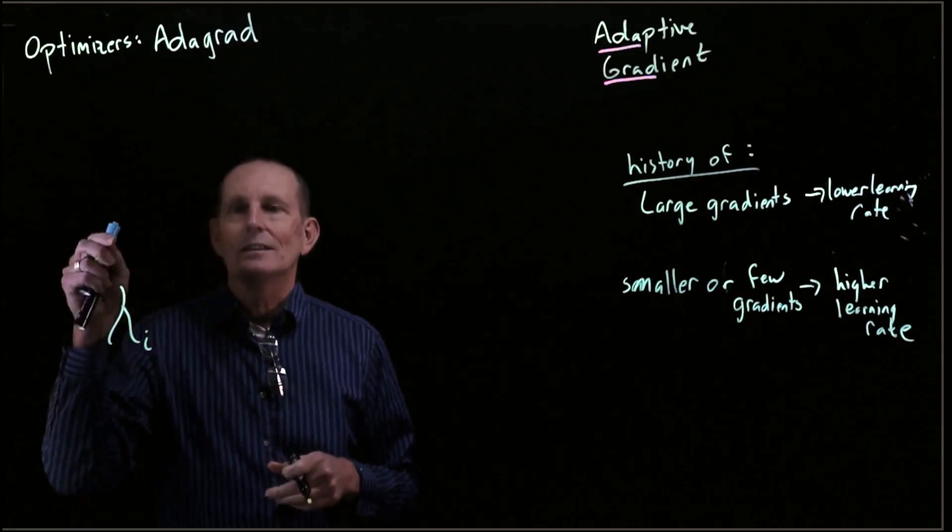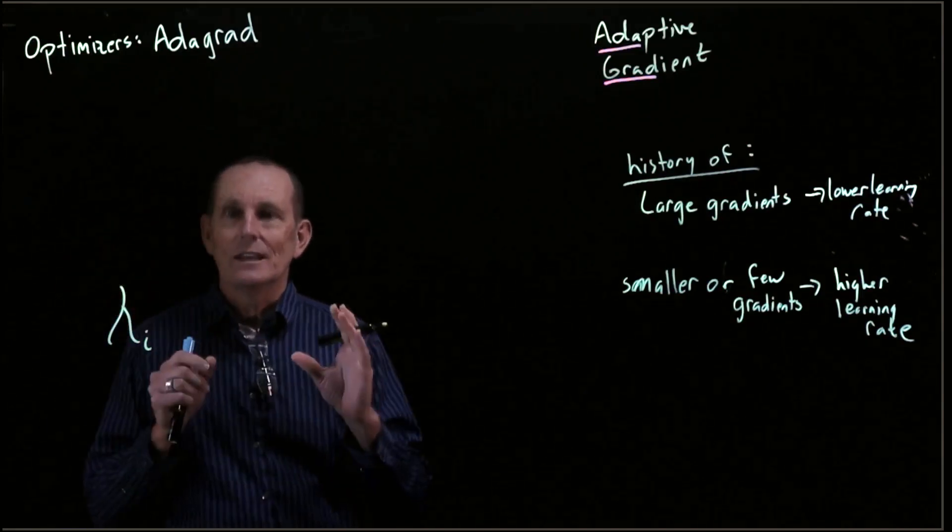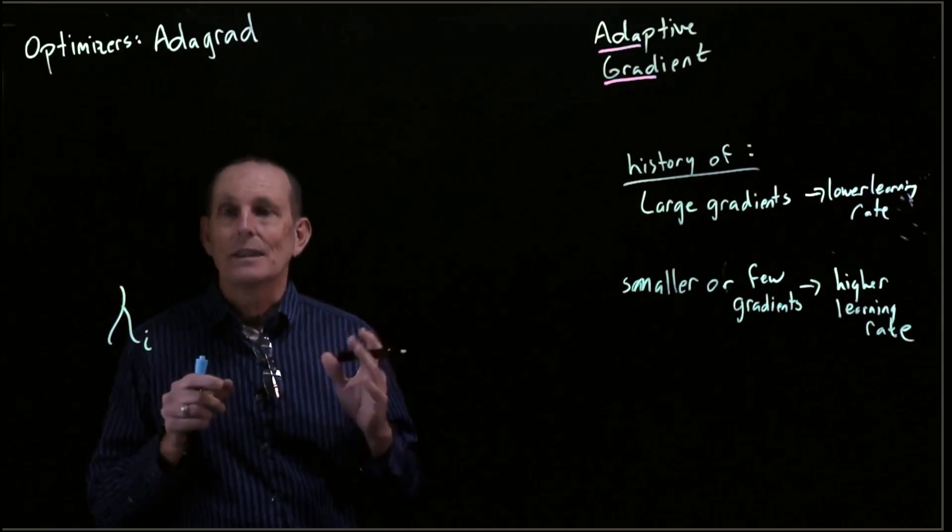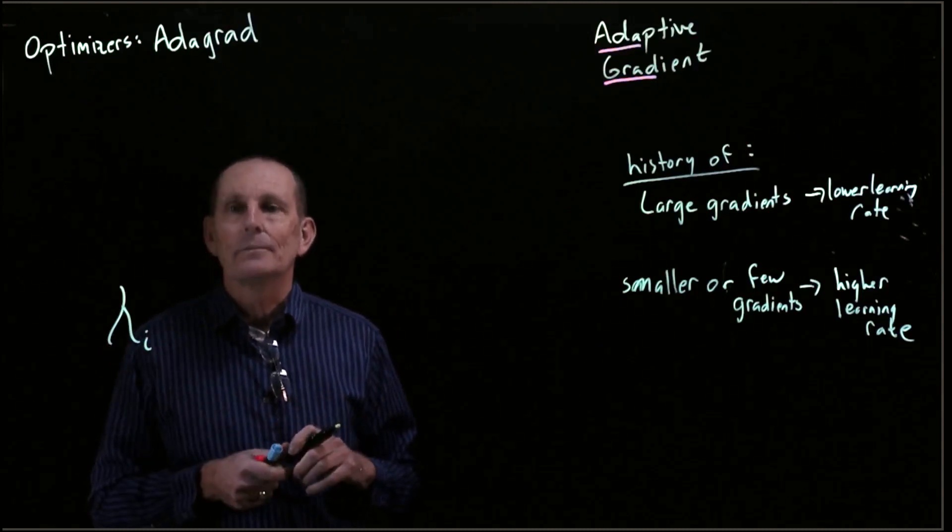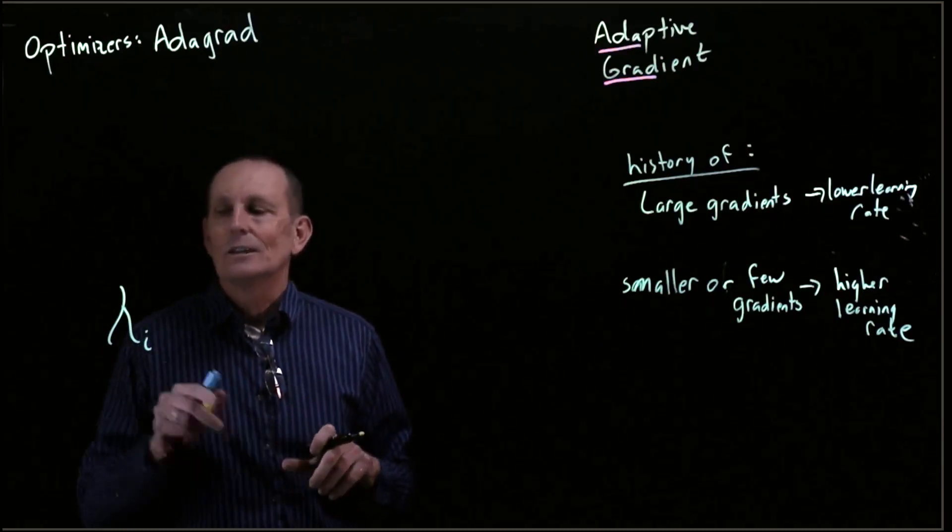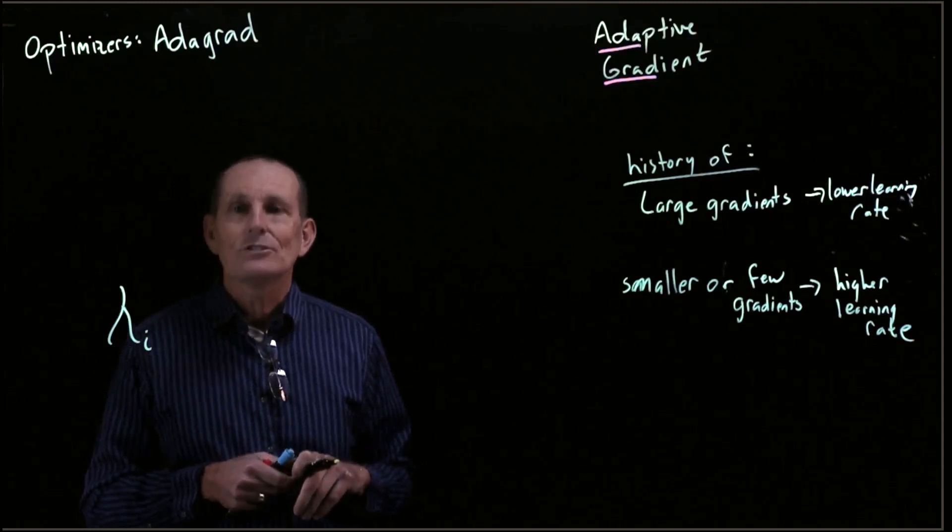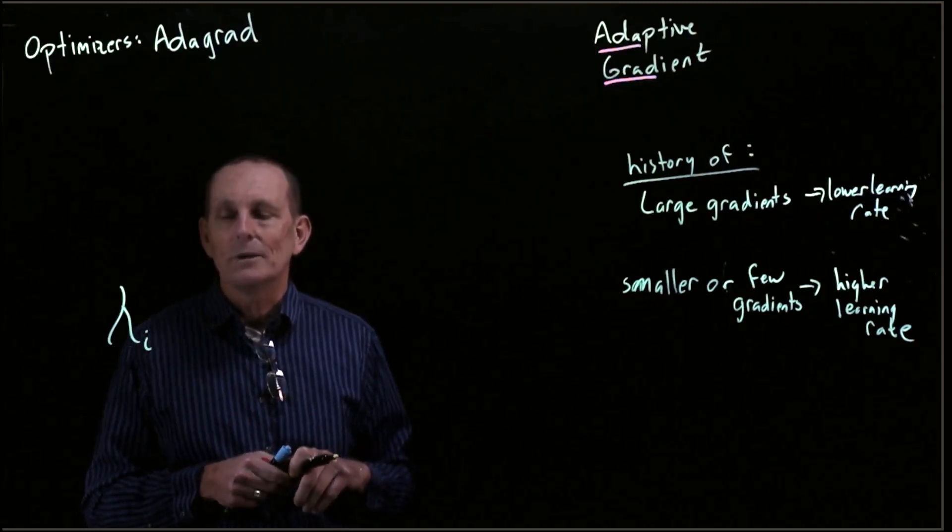So we have for each i, that is in each parameter i in theta, we have a learning rate i. And that learning rate is going to depend on the history of the gradients for that parameter.